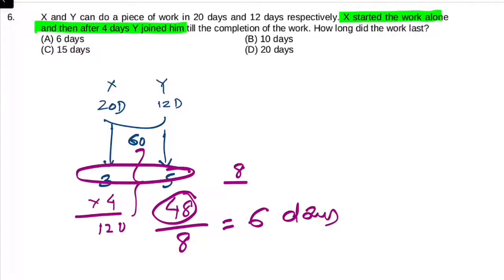To pooch raha hai how long did the work last? Initially jab X ne kaam kiya tha to 4 days ke liye, aur jab dono milkar kaam kar rahe hain to 6 days ke liye. To combined days kitna ho gaya? 10 days. Answer B.